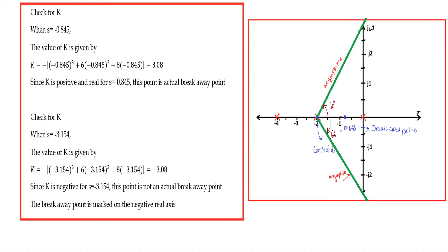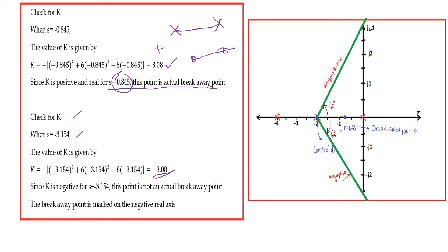Check for K when s = -0.845: K = -(-0.845)³ - 6(-0.845)² - 8(-0.845) = 3.08. Since K is positive, this is a valid point on the root locus and is the actual breakaway point at s = -0.845. For the other value, K is negative, so it is not an actual breakaway point.